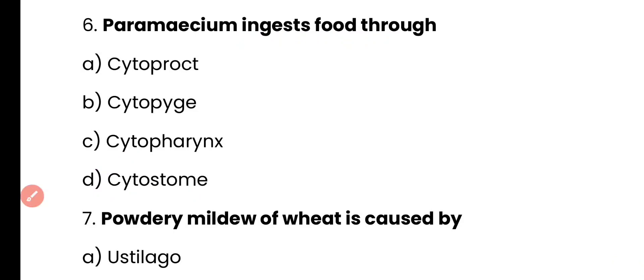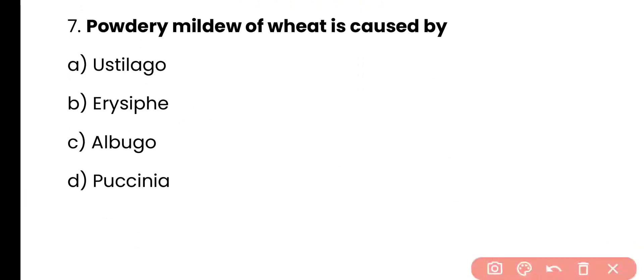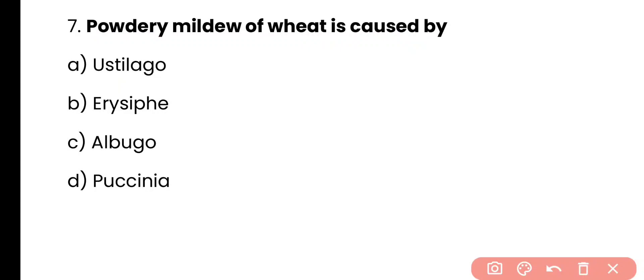Question number 7. Powdery mildew of wheat is caused by: Ustilago, Erysiphe, Albugo, or Paxinia? Correct answer is option B. Erysiphe is a genus of fungus and it causes powdery mildew disease of wheat.